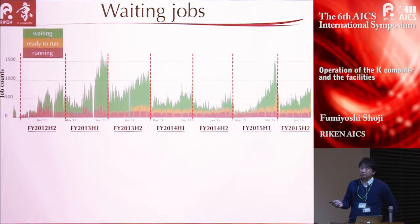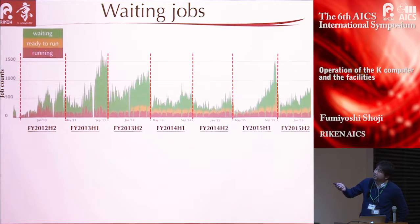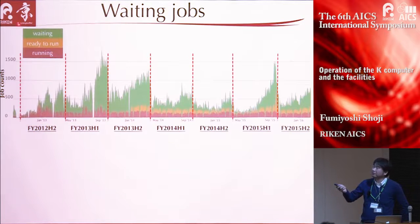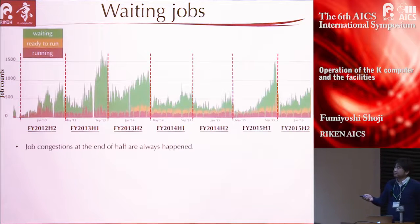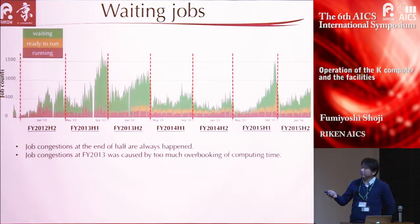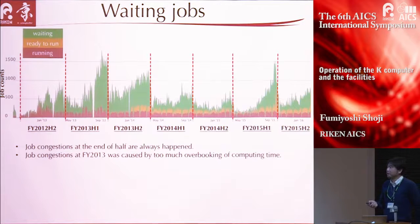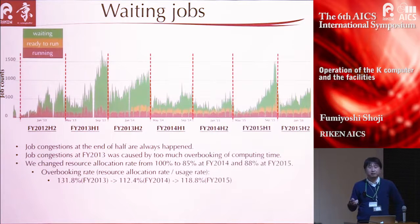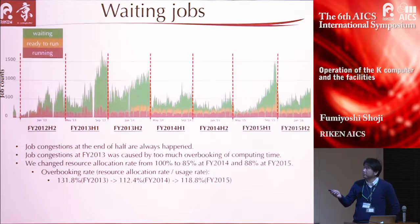This graph shows the job count of waiting jobs. 'Run' means the number of running jobs, orange represents jobs ready to run, and green means waiting. Job congestion at the end of each half-year always happens. The congestion in 2013 was caused by too much overbooking of computing time.